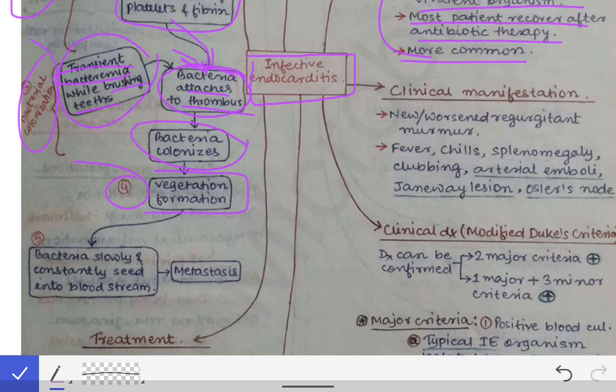After bacterial colonization, the fourth step is vegetation formation. As the bacteria colonize, they form small masses called vegetations. The bacteria multiply in large numbers and slowly seed into the bloodstream, causing metastasis to other sites. This is how they cause damage to the endocardium and valves of the heart, bringing about infective endocarditis.